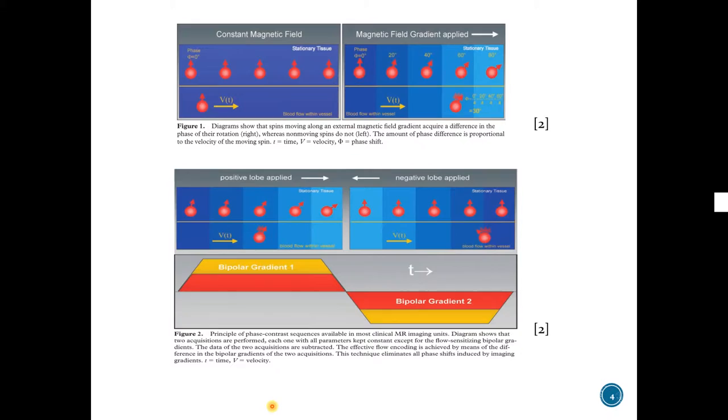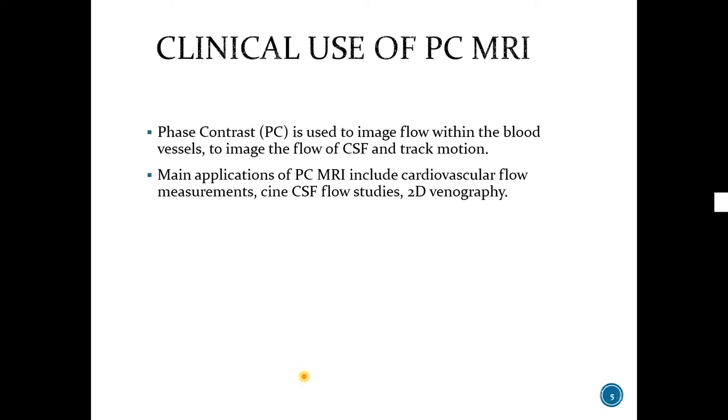Phase contrast is used to image flow within the blood vessels, to image the flow of CSF, and track motion. Main applications of PC MRA include cardiovascular flow measurements, CSF flow studies, and 2D venography.